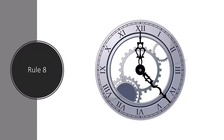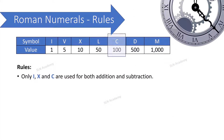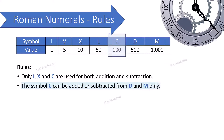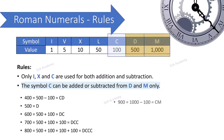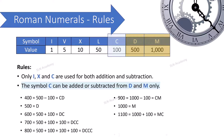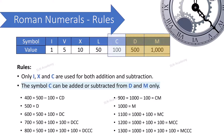Rule number eight: The symbol C can be added to or subtracted from D and M only. C is added to or subtracted from D (CD = 400, DC = 600) and added to or subtracted from M (CM = 900, MC = 1100).